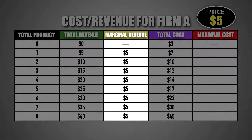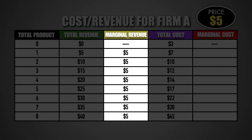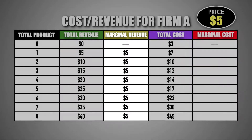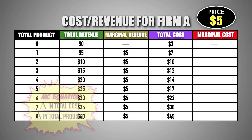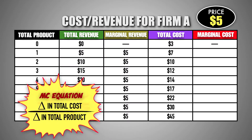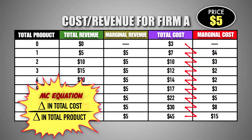Notice that the marginal revenue gained from each unit equals the market price of $5. To calculate each unit's marginal cost, we simply need to compare the firm's total cost before and after the production of each unit. The difference in total cost gives us the marginal cost paid by the firm in order to produce each unit of good M.